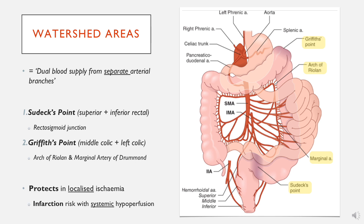These areas are clinically relevant. If a patient has a blood clot occluding the IMA, the rectum would not receive supply from the superior rectal artery, but it would still receive blood from the middle and inferior rectal arteries. Similarly, at Griffith's point, some blood supply is maintained via the SMA even if the IMA is blocked. However, the problem arises with systemic hypoperfusion — in shock, these vessels are the most distal and smallest, so they become the most ischemic, just as a patient in shock will have cold hands and feet and essentially a cold bowel.